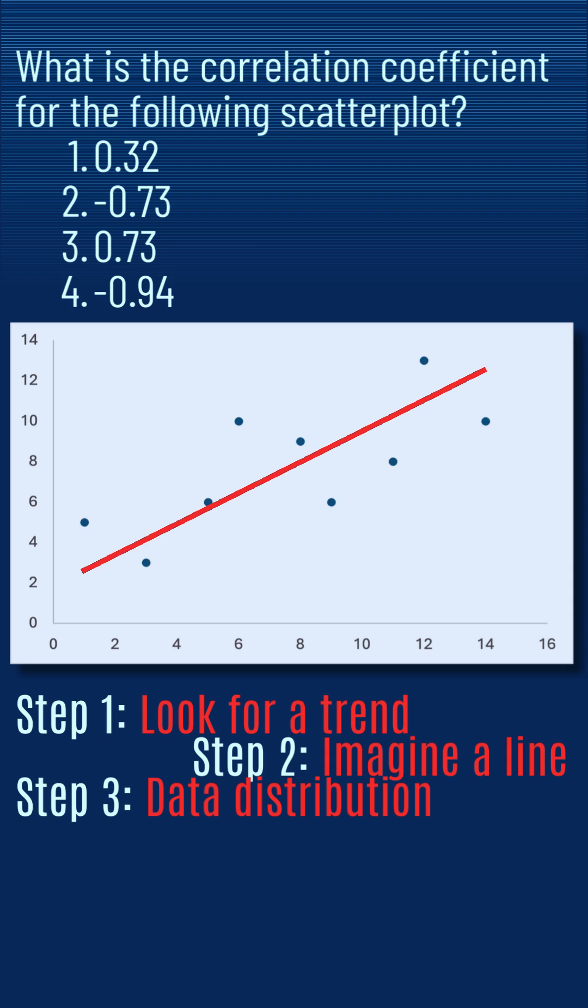If clustered tightly, the correlation will be strong. If there is a clear trend with noticeable deviations from the trend line, the correlation will be moderate. And if more scatter with no clear trend, the correlation will be weak.